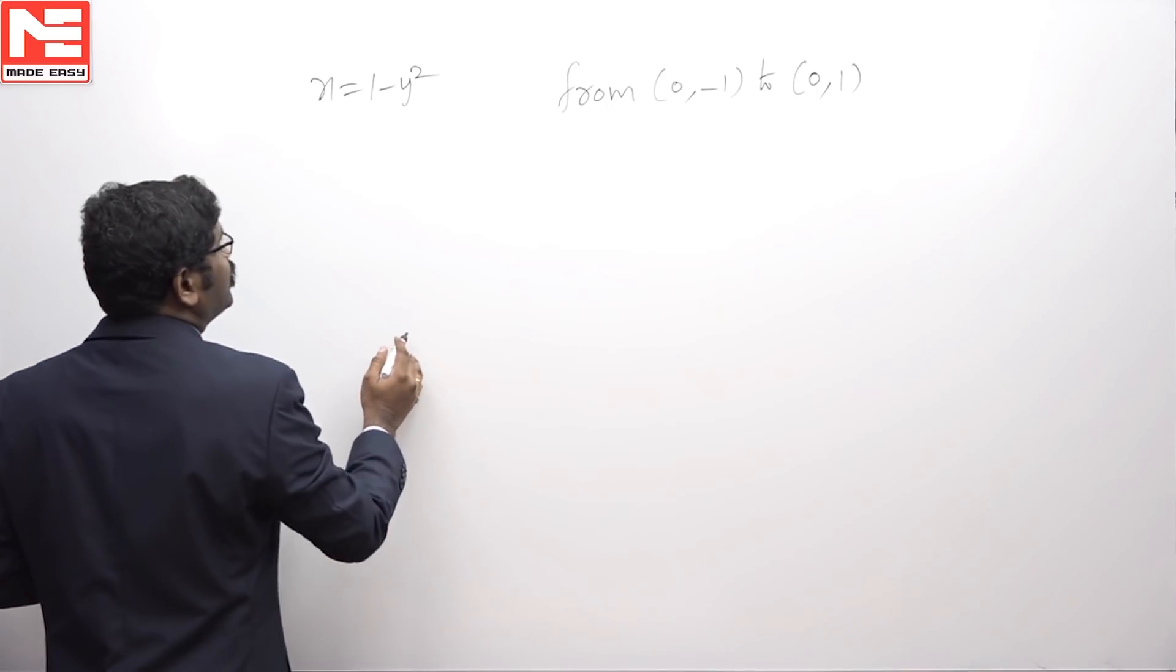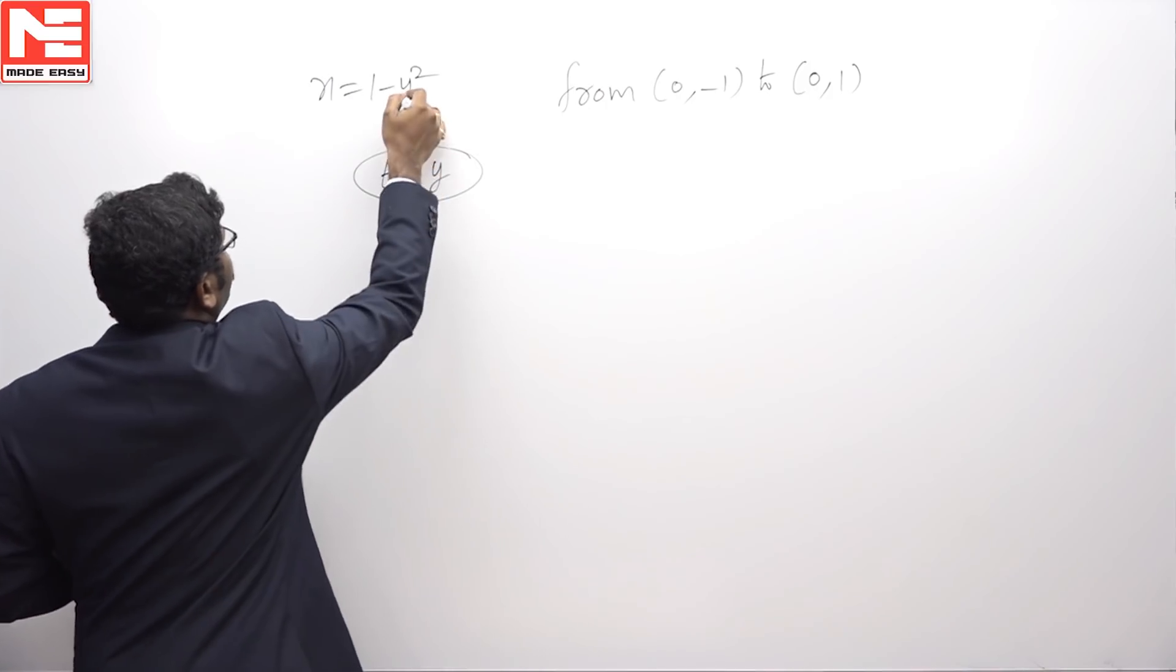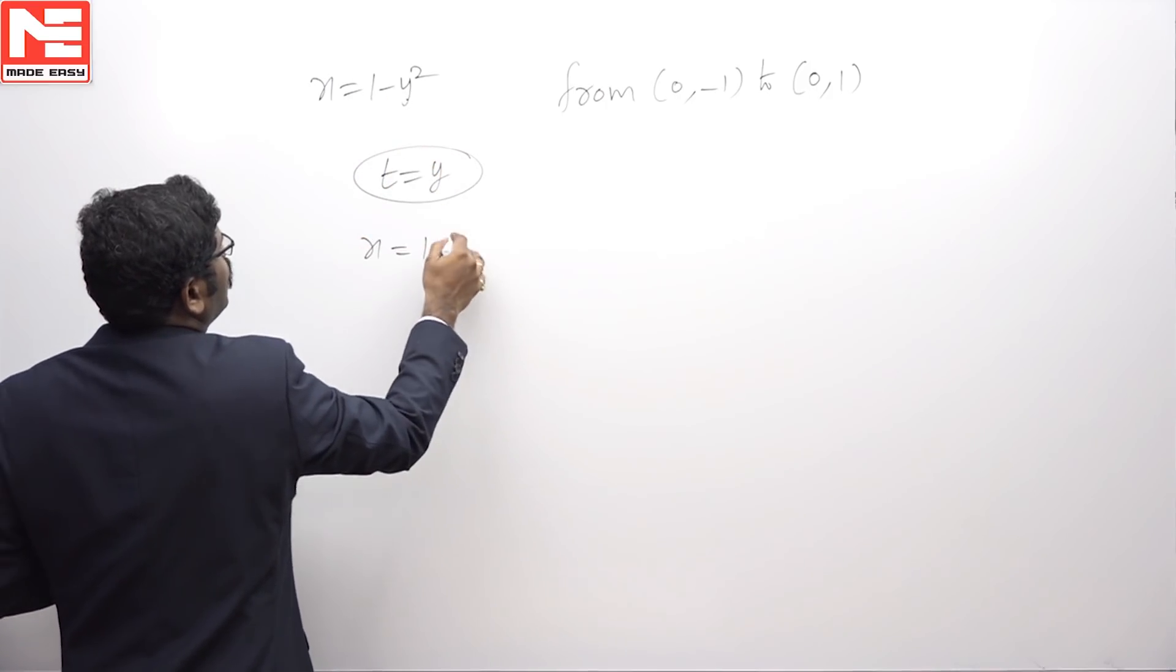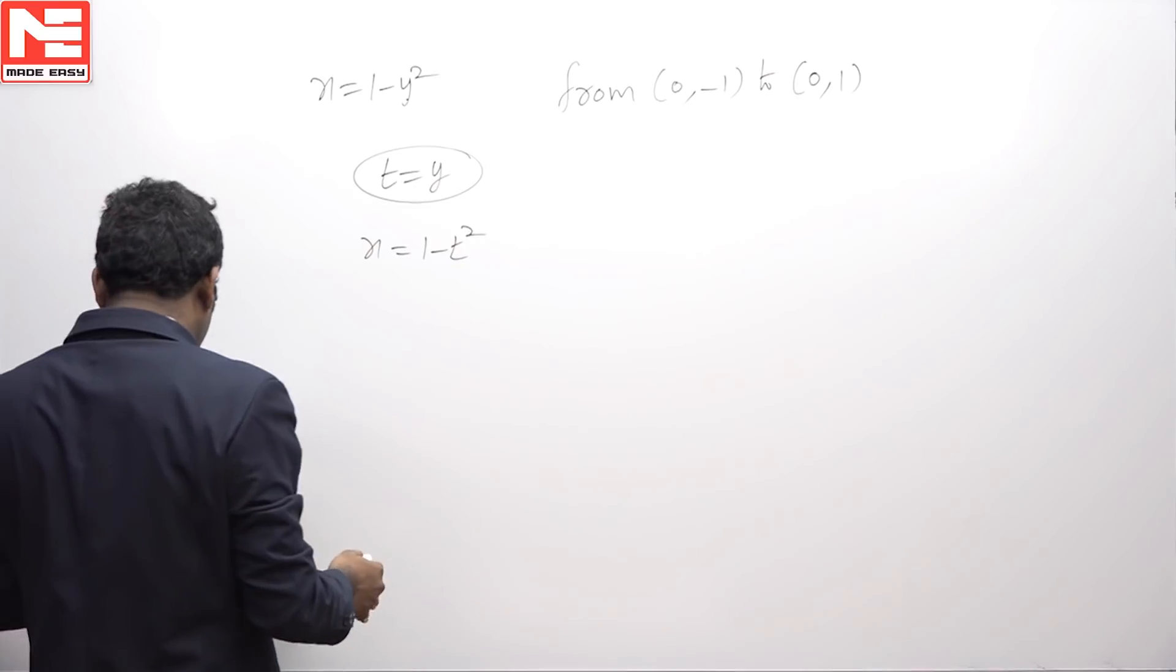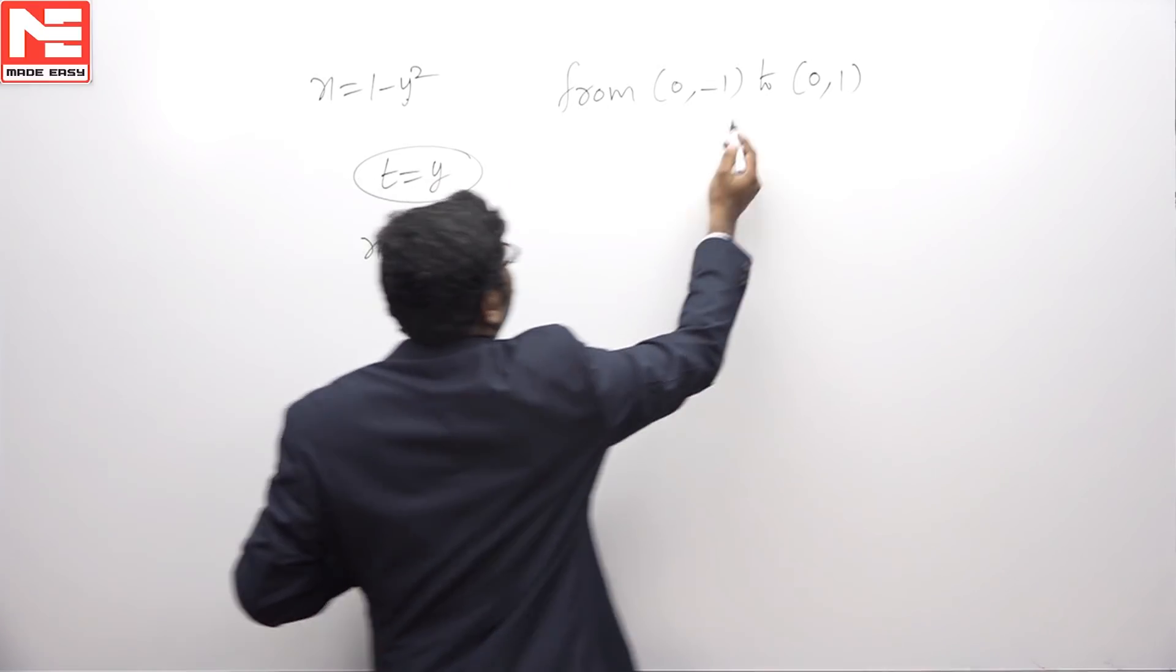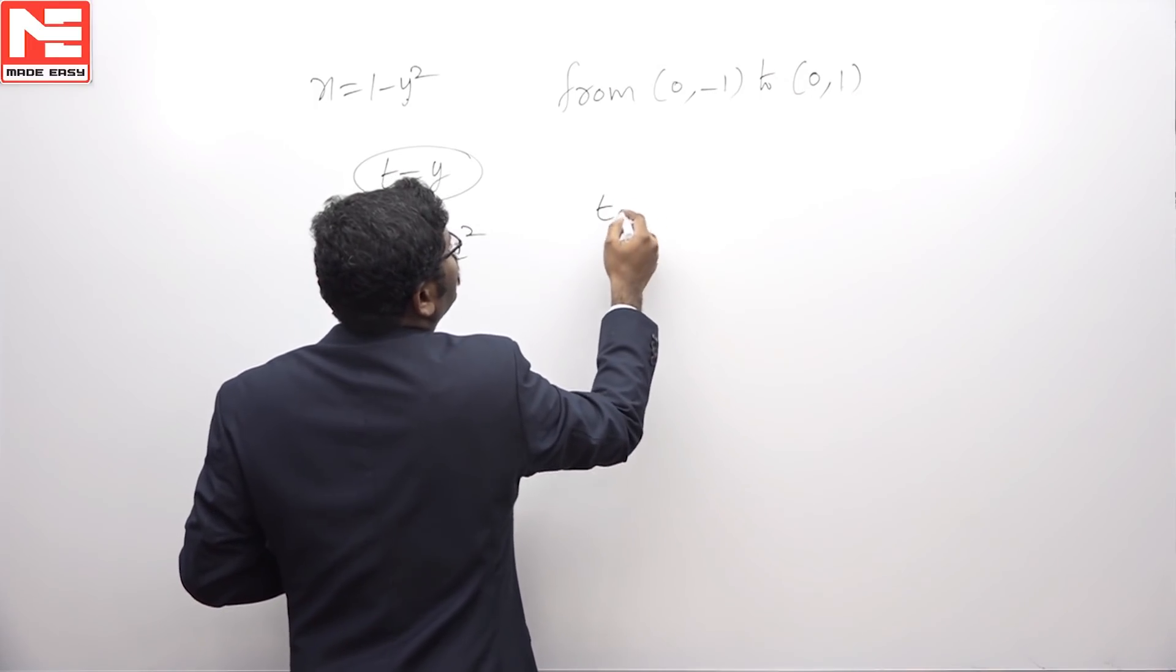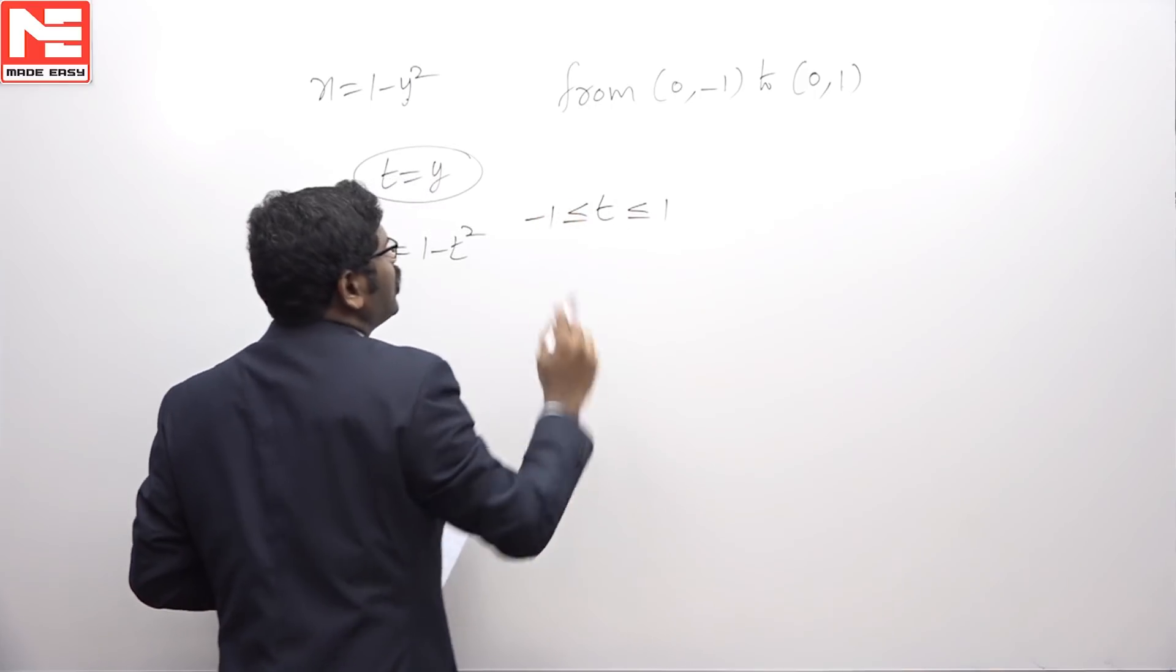If you take parametric equations of the curve, t = y, then x is 1 - t², y is t. Here y varies from -1 to 1, therefore t varies from -1 to 1.